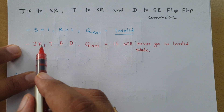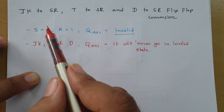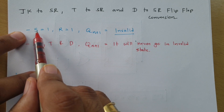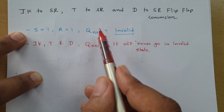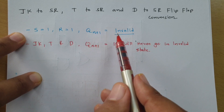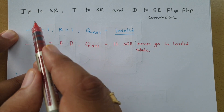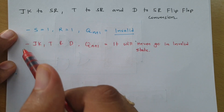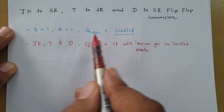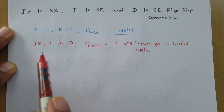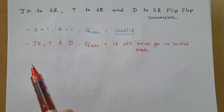What this means is: when you want to form an SR flip-flop by using another flip-flop, the condition S=1 and R=1 can never produce an invalid state — because that invalid state simply does not exist in JK, T, or D flip-flops. This is what we need to keep in mind.